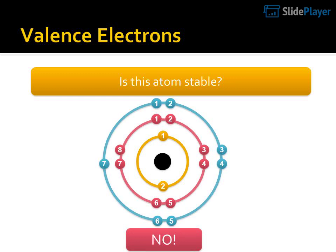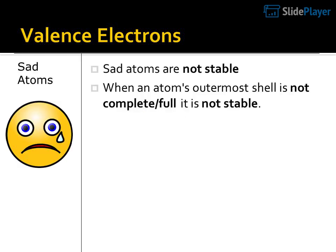Is this atom stable? Electron configuration: 1, 2, 1, 2, 1, 8, 3, 3, 3, 7, 4, 2, 6 — No.